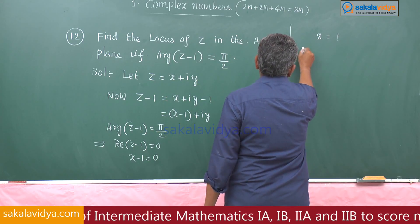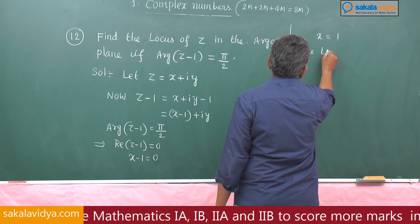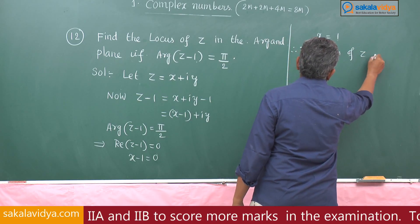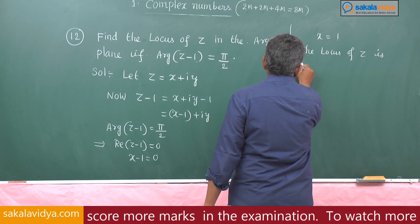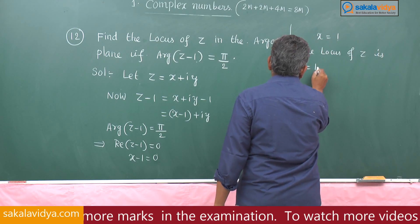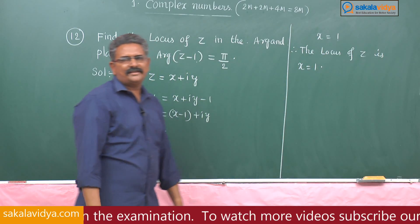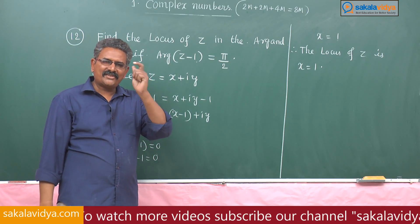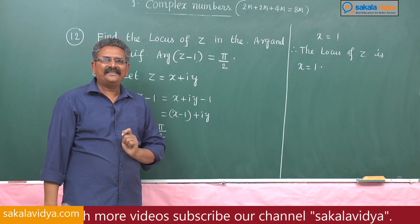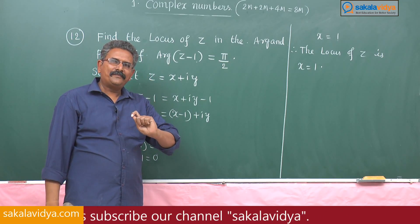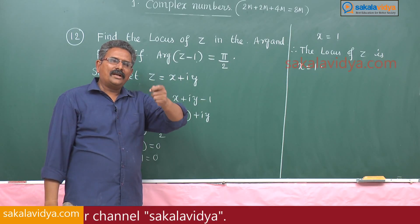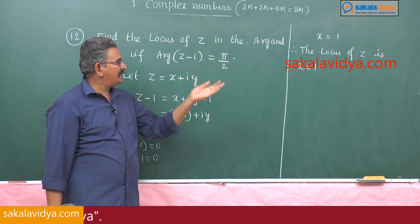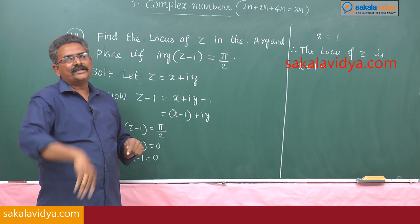Therefore, the locus of z is x equals 1. This represents a straight line passing through (1, 0) and parallel to the y-axis — that is, a vertical line.